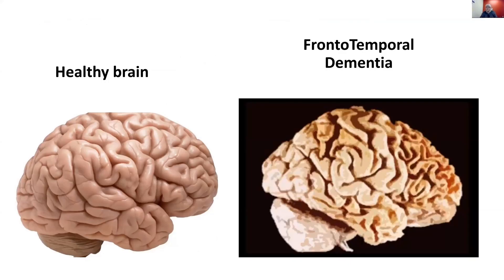Frontal temporal dementia is the fourth most common type, and there are multiple types: a behavioral variant, primary progressive aphasia with different subtypes, and movement disorders that are all frontal. Here's a healthy brain compared to a frontal temporal dementia brain. This affects younger people. The most marked initial sign is personality changes — there's not a lot of memory issue here. You don't look for someone to be forgetful; instead, look for lack of inhibition and big changes in the way somebody conducts their life.